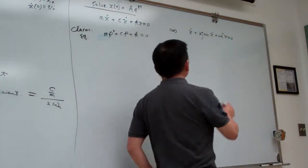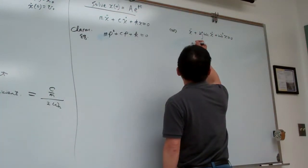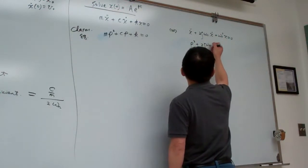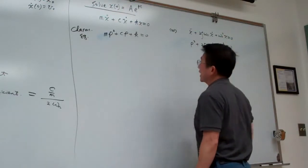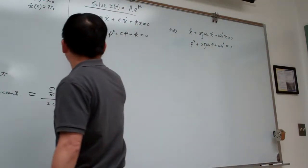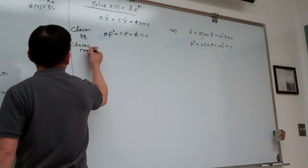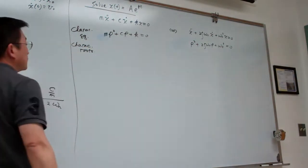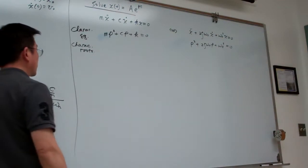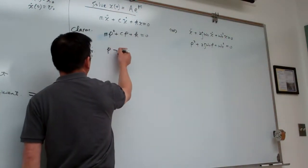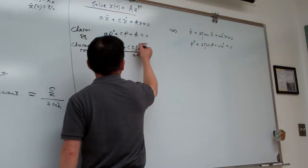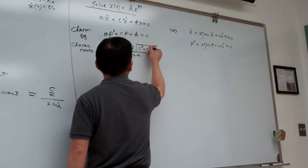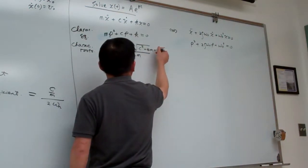The same thing for the normalized system gives: p² + 2·zeta·omega_n·p + omega_n² = 0. That is the characteristic equation. The roots are: p = (-c ± sqrt(c² - 4mk)) / (2m).